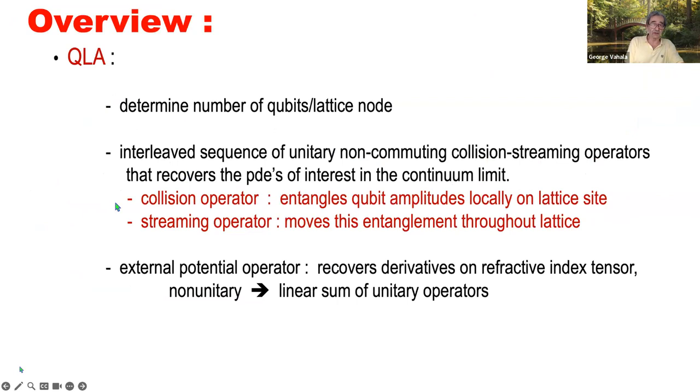So the collision operators will entangle the qubits locally at each lattice site. The streaming operators will then move this entanglement throughout the lattice. And then we have to introduce another potential operator because there's derivatives on the refractive index. It is non-unitary, but we can approximate that by a linear sum of unitary operators.